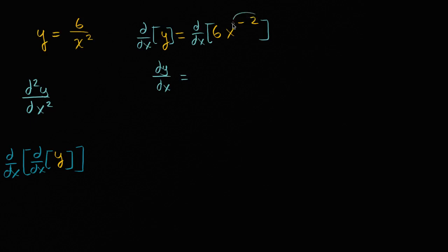Now on the right-hand side, take our negative 2, multiply it times the 6. We get negative 12x to the negative 2 minus 1 is x to the negative 3. So this is negative 12x to the negative 3.